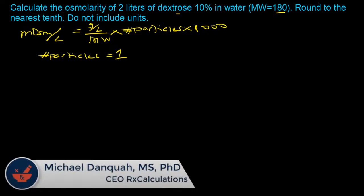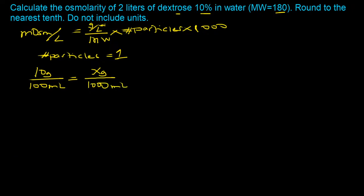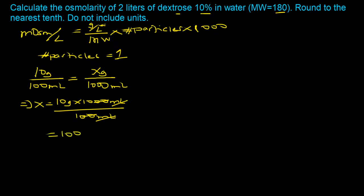The last piece is to determine the weight in grams per liter using the concentration. You have 10%, which implies 10 grams in 100 milliliters. Because we want grams per liter, and a liter is 1,000 milliliters, we solve for X: X equals 10 grams times 1,000 milliliters divided by 100 milliliters. The milliliters cancel out, giving us 100 grams per liter.